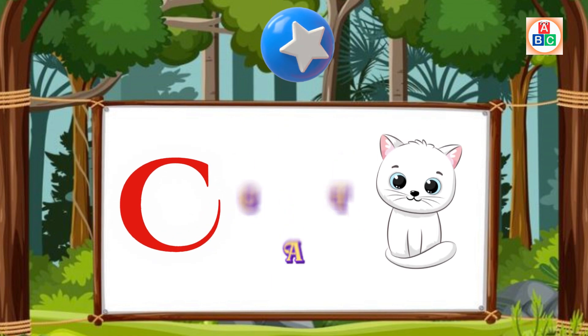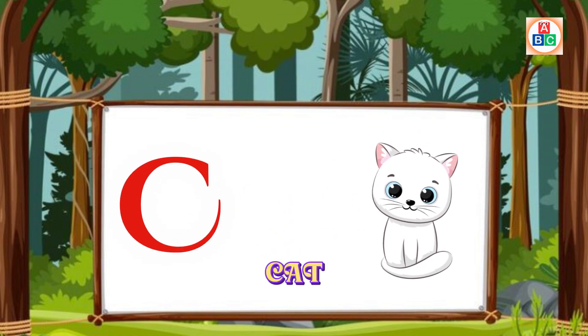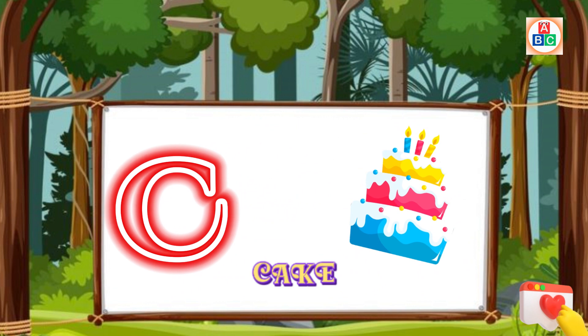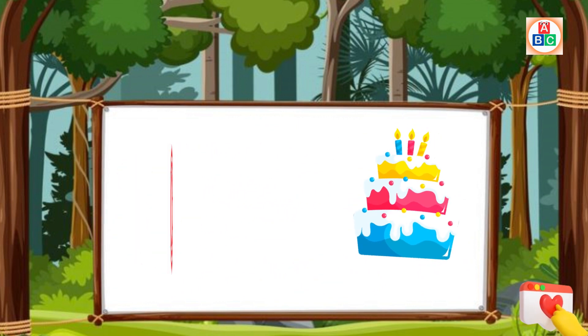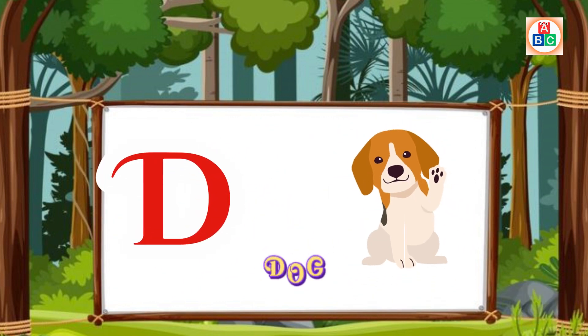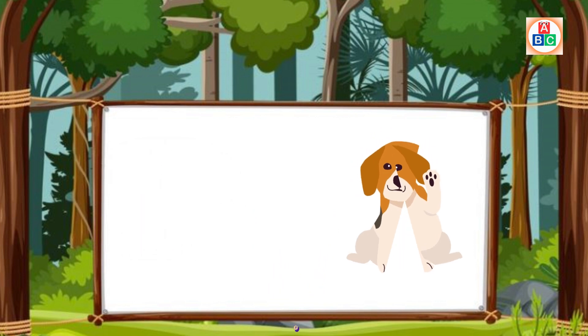C is for Cat. C. C. Cat. C is for Cake. C. C. Cake. D is for Dog. D. D. Dog.